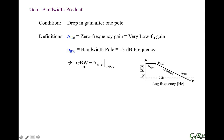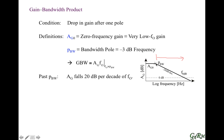Here's the gain bandwidth product. By definition, the gain bandwidth product is the product of gain and frequency at frequencies greater than the bandwidth pole. This is the region on the graph where we apply the gain bandwidth product definition. Past this pole, the gain drops at a rate of negative 20 dB per decade, meaning the gain drops by a factor of 10 as frequency increases by a factor of 10 — so it falls linearly.